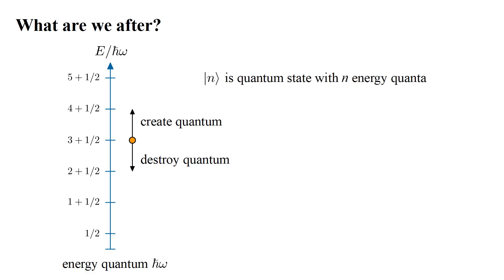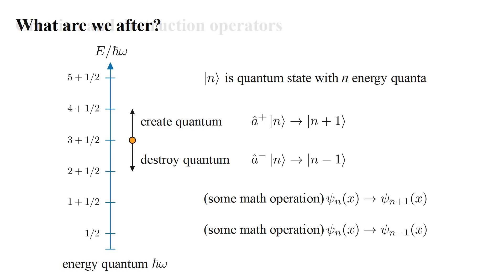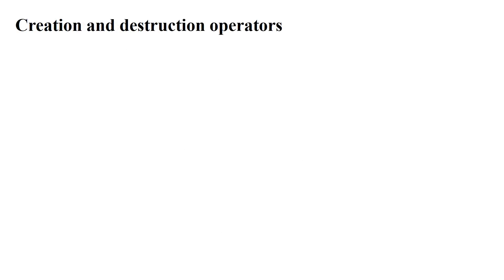Using the Dirac ket notation to represent the quantum state with n energy quanta, we want to find an operator — call it a-hat-plus — which operates on state n to produce state n plus one. And an operator — call it a-hat-minus — which operates on state n to produce state n minus one. More concretely, we have to find some mathematical operation which, when applied to wave function psi-n, produces psi-n-plus-one. And some mathematical operation which, when applied to psi-n, produces psi-n-minus-one. We'll call these the creation and destruction operators.